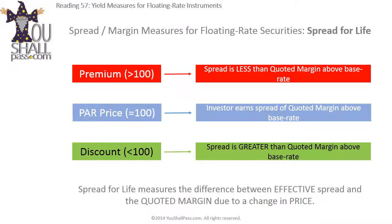How can the risk premium change once the bond is issued? The answer lies in the price of the bond. If a bond grows less risky, the quoted margin is more than sufficient compensation, so the price goes up — and as the price goes up, the effective spread earned by a new investor goes down. On the flip side, if the issuer's risk profile worsens, the quoted margin may be insufficient, so the price goes down and the effective spread earned by a new investor goes up. In both cases, the effective spread differs from the quoted margin, and just how different it is is measured by a measure called spread for life.